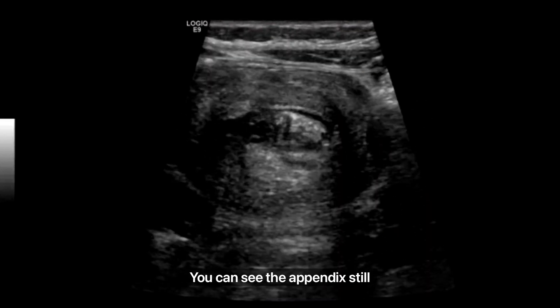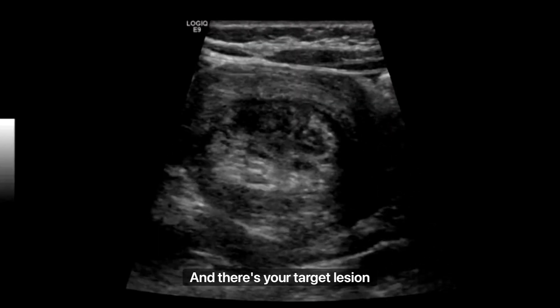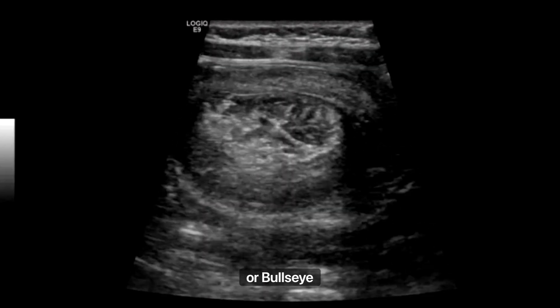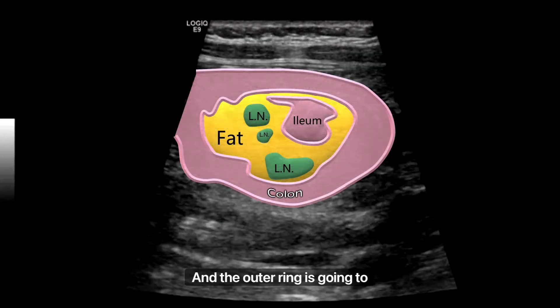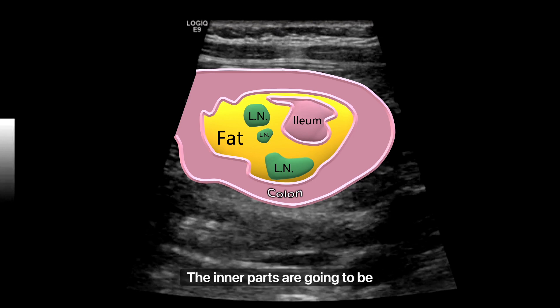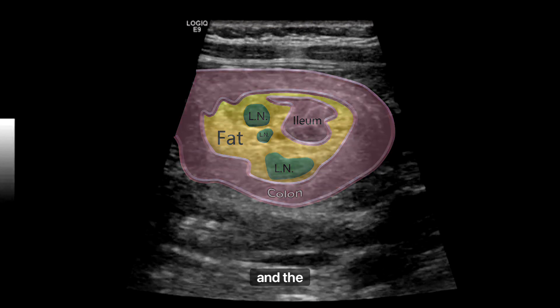Continuing to sweep up, you can see the appendix still there, and there's your target lesion or bullseye lesion. The outer ring is going to represent the ascending colon. The inner parts are going to be lymph nodes — you can see there are three lymph nodes there — the mesenteric fat, and the ileum.